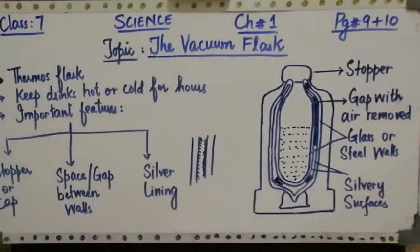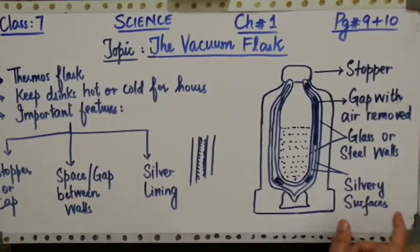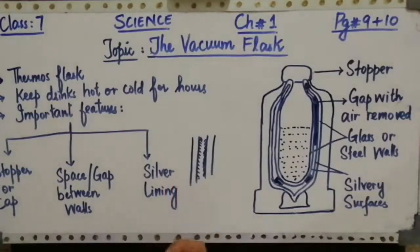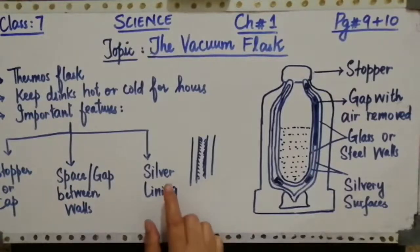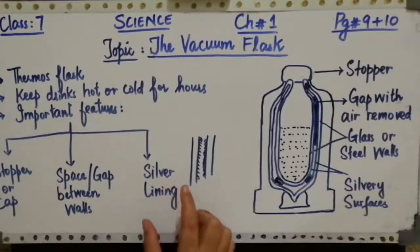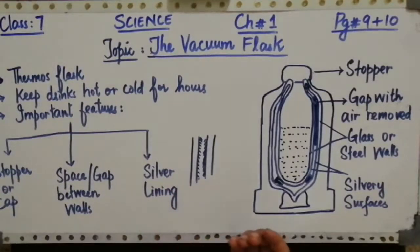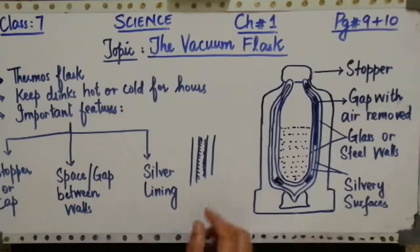The shiny surface inside the thermos flask is actually lined or coated with silver. This shiny surface is covered with silver. What is the purpose of this silver lining on the walls? It again reduces the heat loss, but this time not by conduction and convection — this time by radiation.